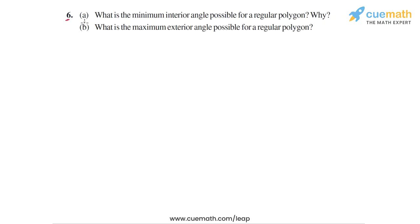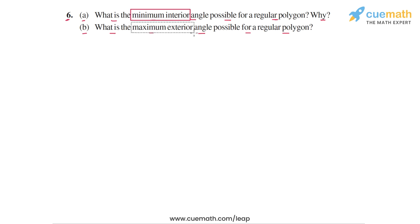In question 6, we have two parts A and B. Part A says: what is the minimum interior angle possible for a regular polygon? And part B says: what is the maximum exterior angle possible for a regular polygon? So in part A we have to find the minimum interior angle possible, and in part B we have to find the maximum exterior angle possible.